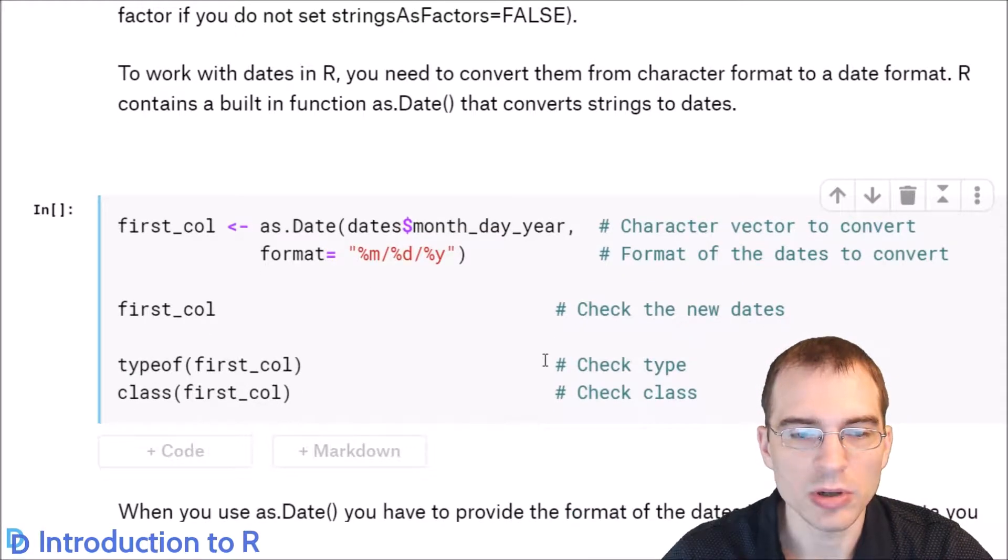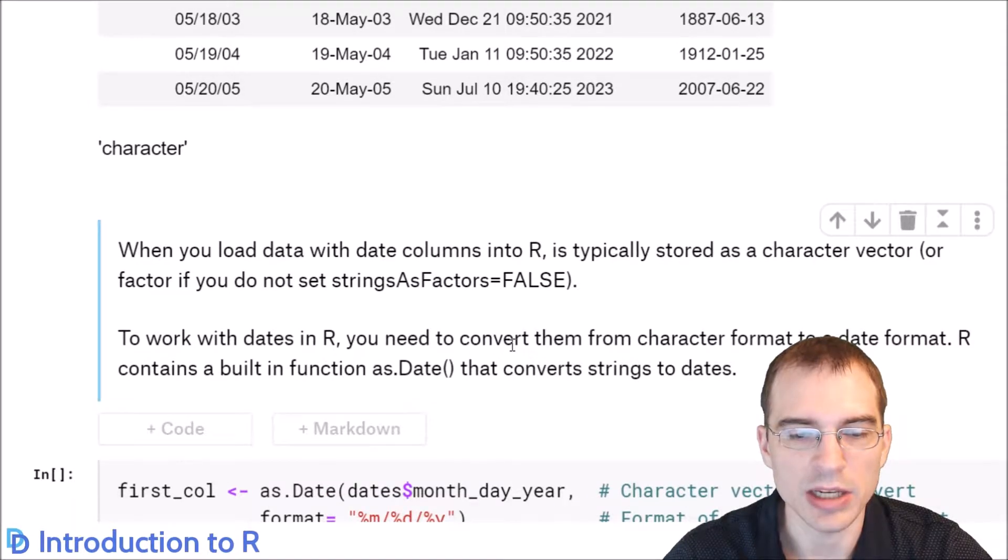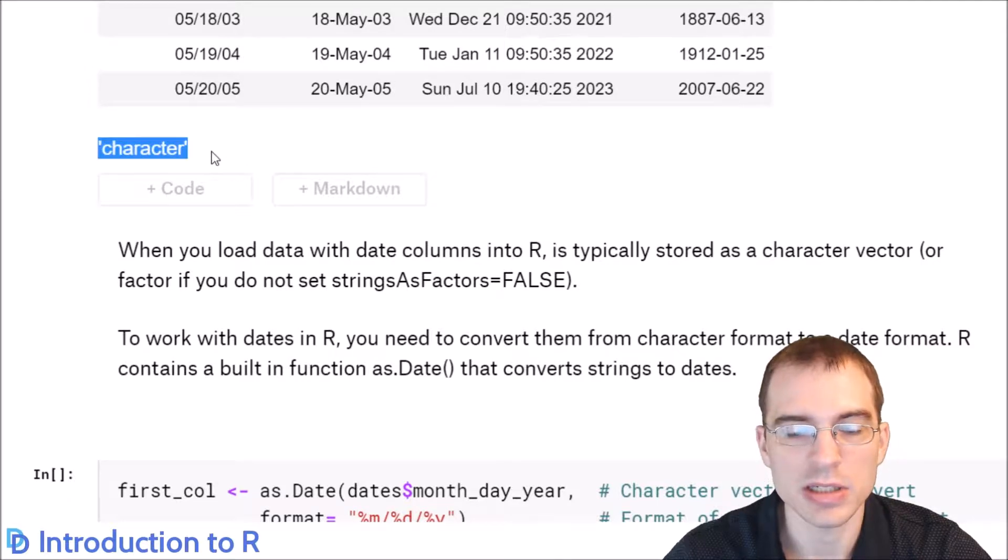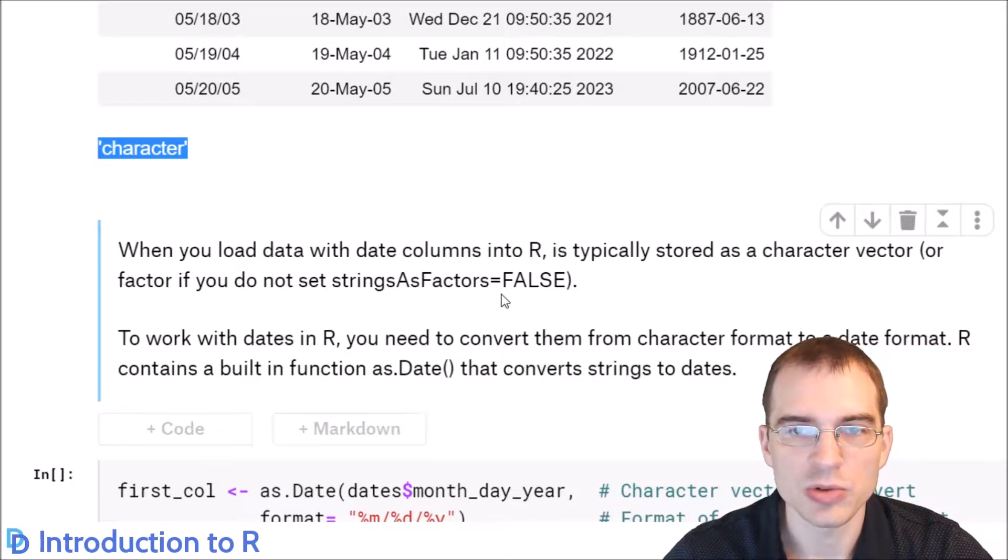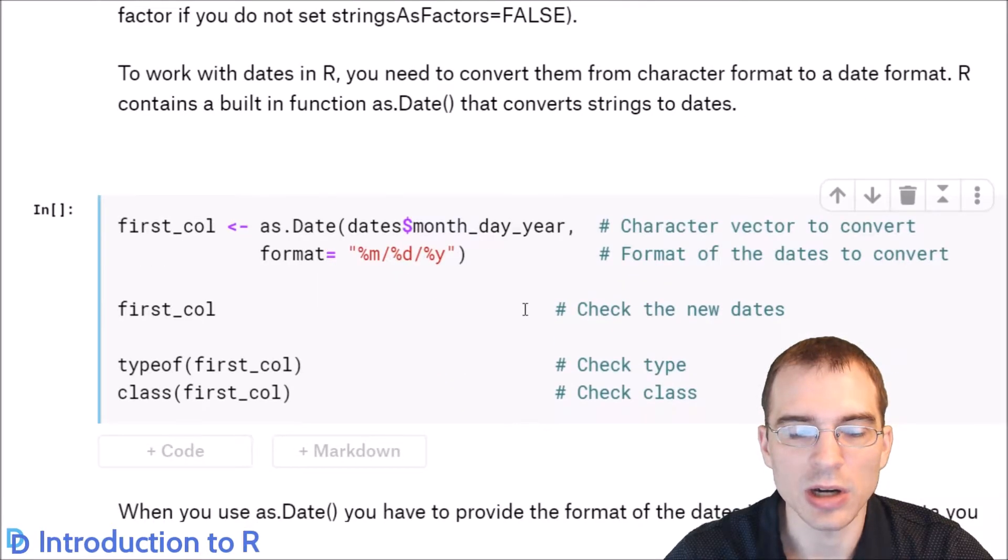When you load data into R, by default, it's going to be loaded in as a character. You can see that when we ran typeof here, it says character. So the first thing you generally want to do when working with dates is to convert them into a date or date time format. One way that you can do that in R is using the as.Date function.